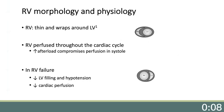The right ventricle is thin and wraps around the LV. The septum is a major contributor to RV function and ejection fraction. Normally, the right ventricle systolic and diastolic pressure is low, thus the RV is perfused throughout the cardiac cycle. However, a sudden increase in RV afterload or wall stress will compromise the RV perfusion.